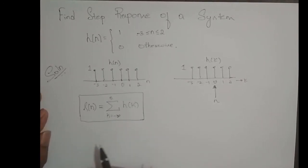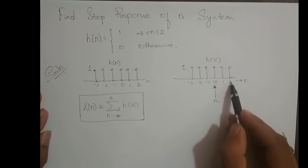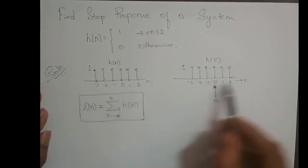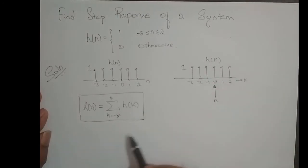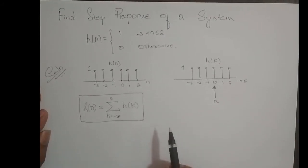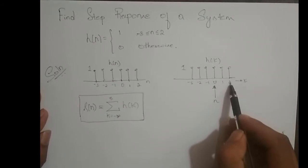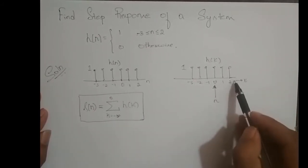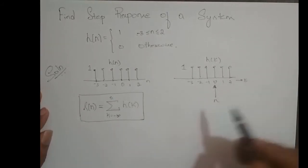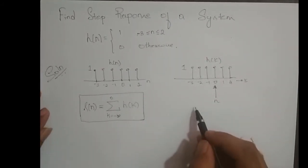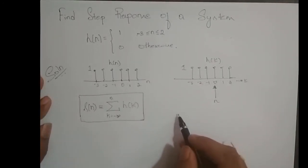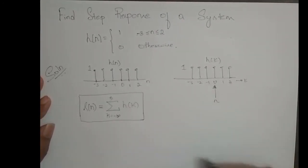I hope you got the concept. For example, if I keep n at 2, then the summation limit becomes k varying from minus infinity till 2 — I need to sum up all the samples of H of k. Say if I keep n at 10 — is it possible? Well, my k ends at 2, I cannot go beyond 2 in terms of non-zero samples. Even if I keep n at 10, after 2 everything is 0, so that summing up does not count. Let me show you what is happening here, then we will solve the problem.